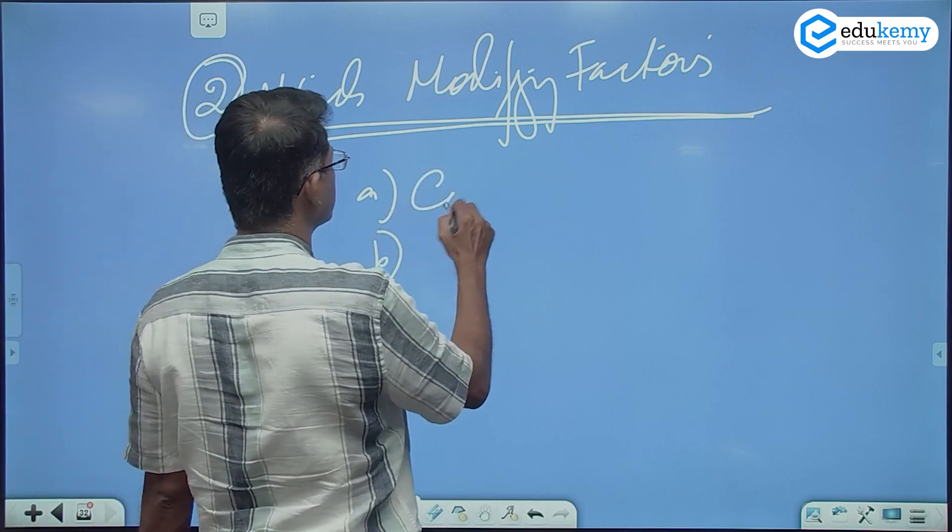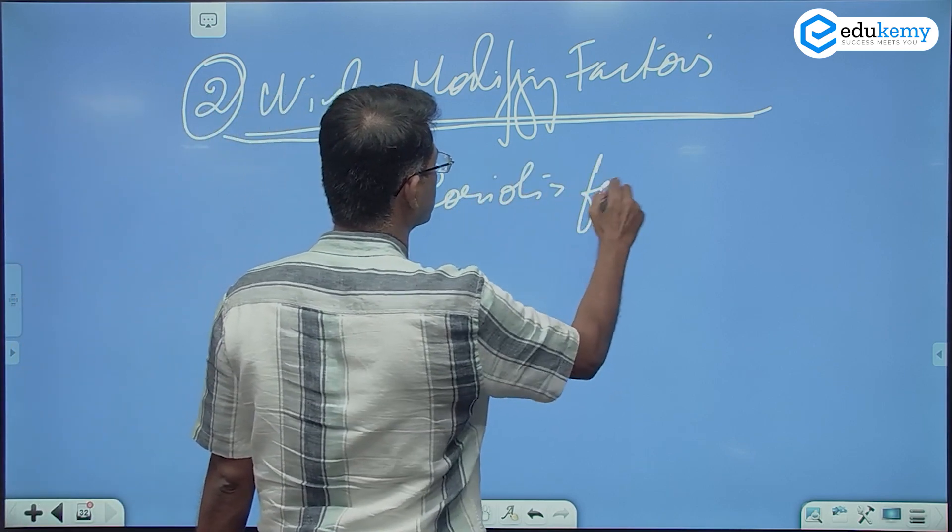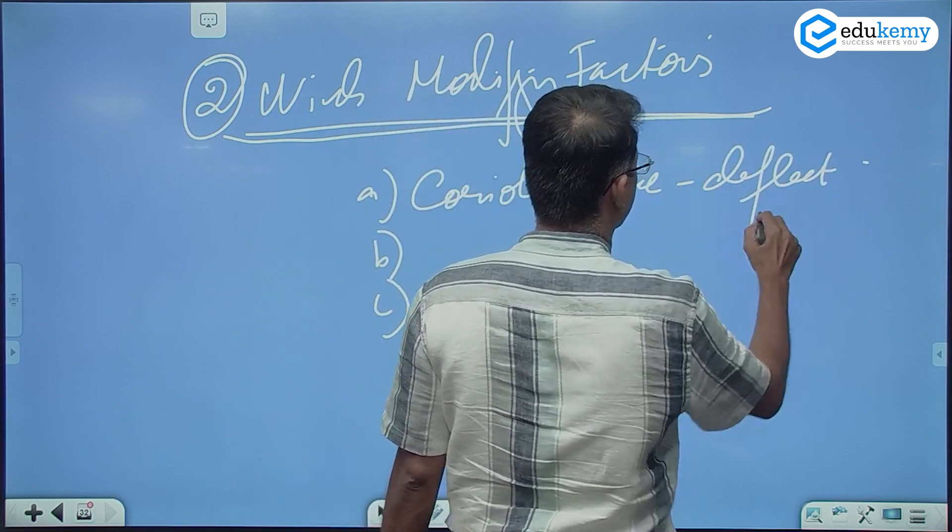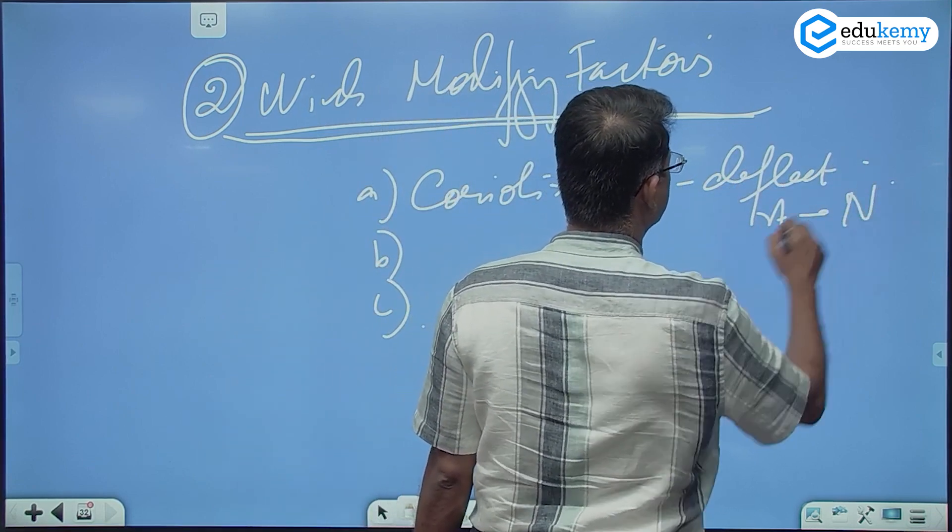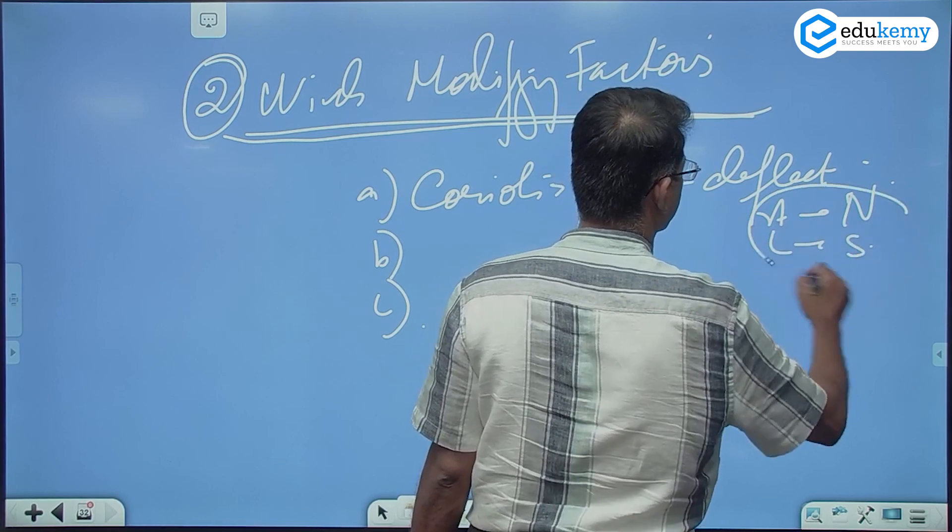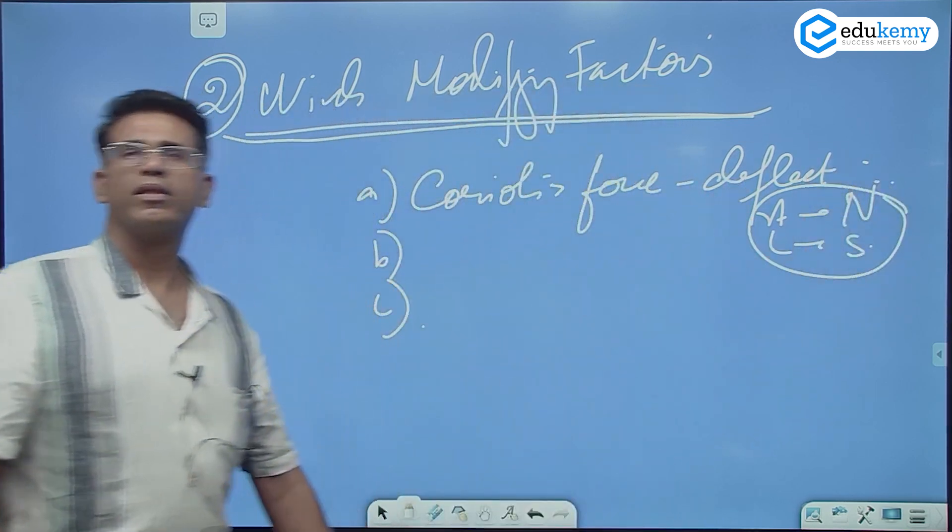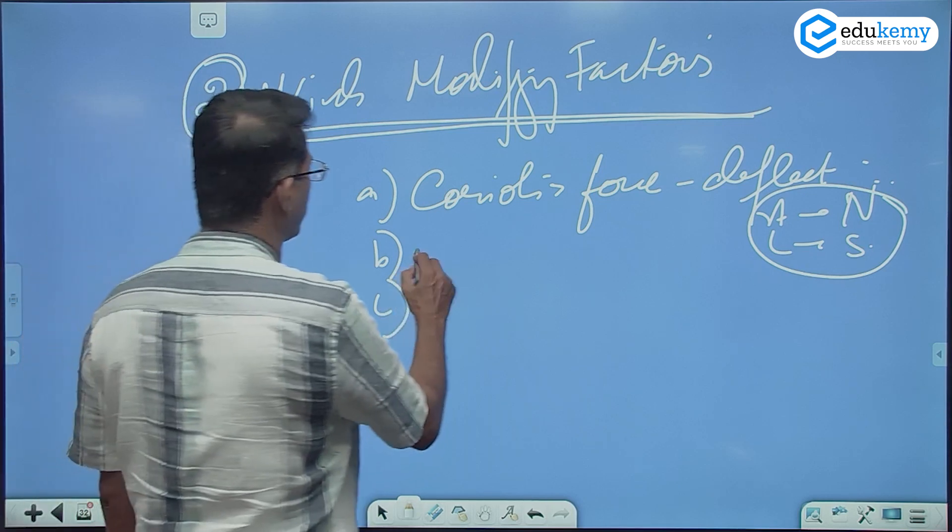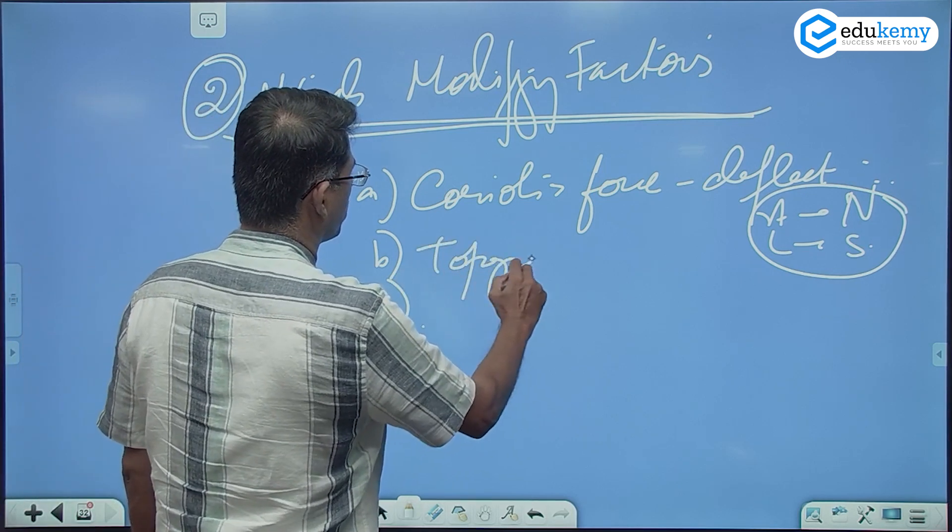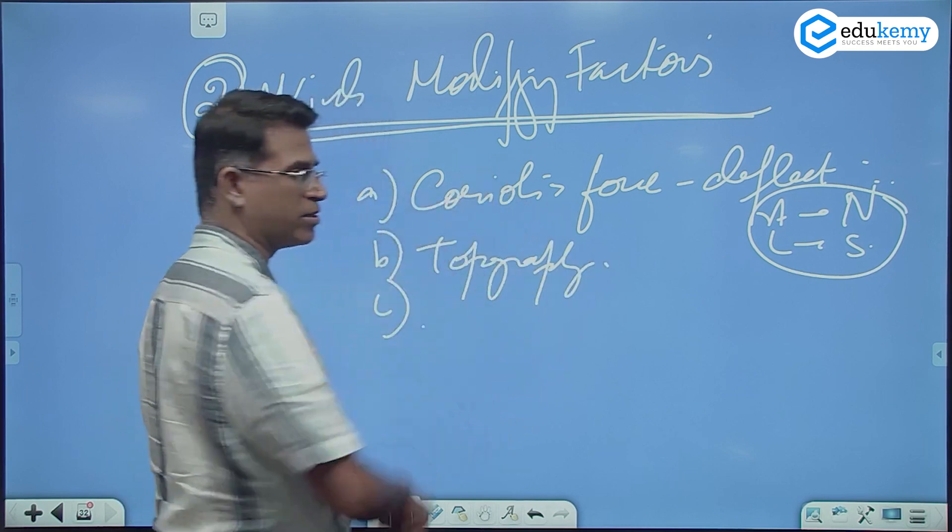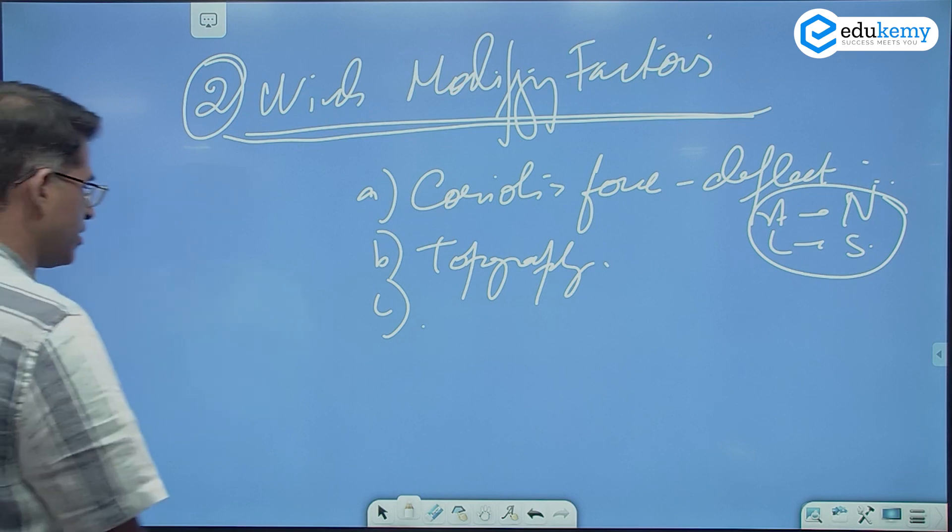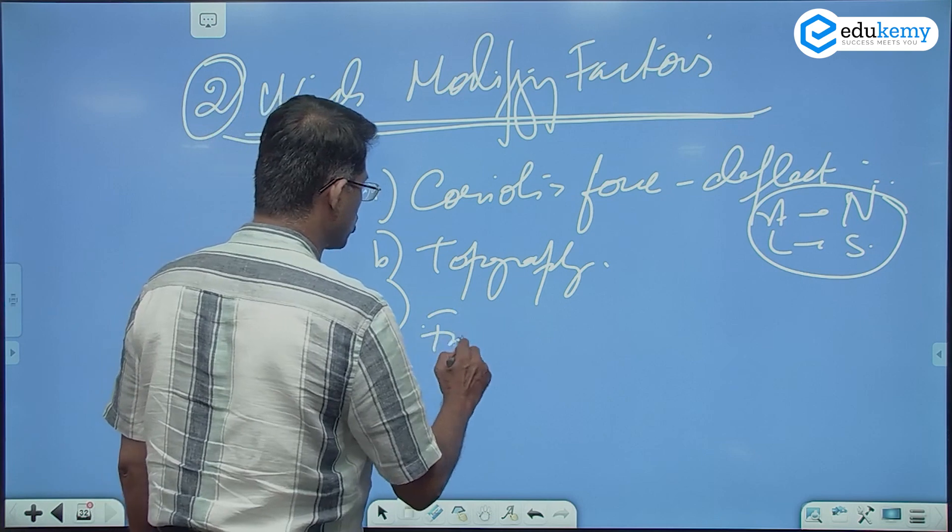One I said was the Coriolis force. This will deflect right in the northern hemisphere, left in the southern hemisphere. The Coriolis force can deflect. Modifying factor can be topography. Mountains can bend the winds. The modifying factors can also be friction.